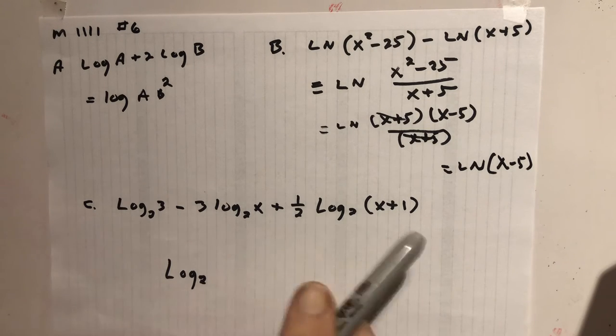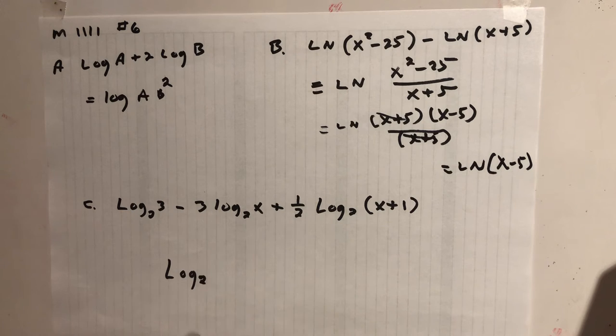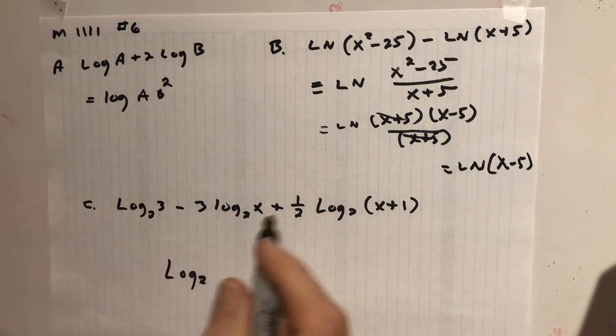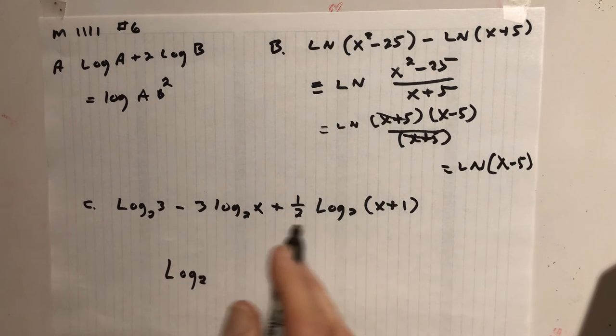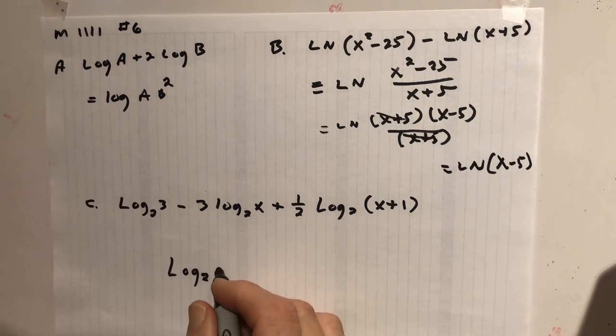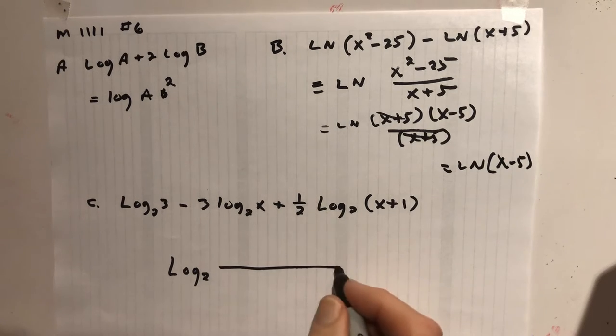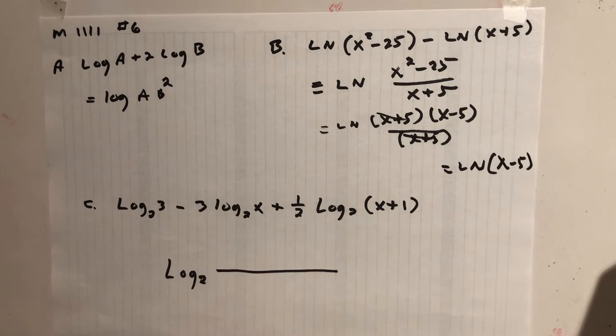All right, down here, this is what it'll look like on the test. We got one, two, three logs. We want to put them together. Are any of them negative? Oh, here's a negative. So you better put a fraction bar. If they're all positive, you don't need the fraction bar.